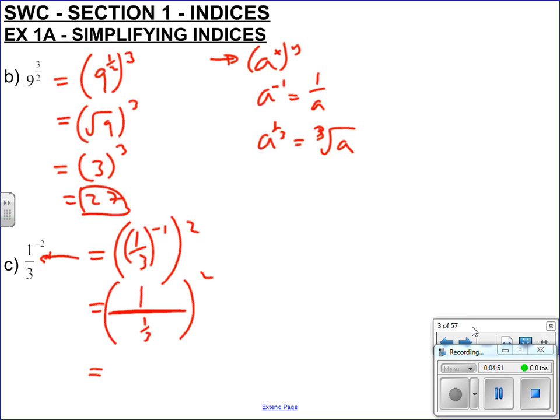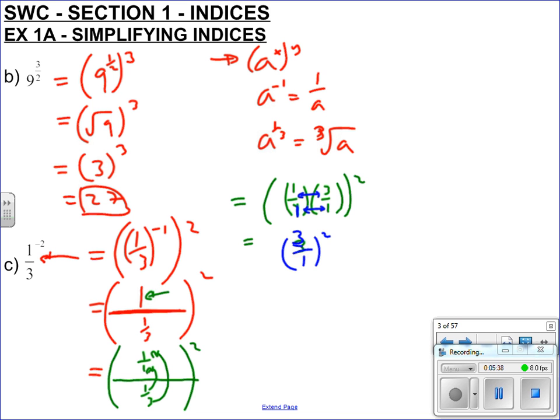Hopefully you remember from GCSE how to deal with fractions like this. 1 on top is the same as 1 over 1. Big line over your third all squared. If you've got a fraction divided by a fraction, it flips over. So this becomes 1 over 1 times by 3 over 1, all squared. When you multiply fractions together, it's top times top and bottom times bottom. So 1 times 3 is 3, 1 times 1 is 1, giving you 3 over 1, which is 3. And this is all squared, so you've got 3 squared, which is 9. So lots of indices theory there. That's it for this exercise.